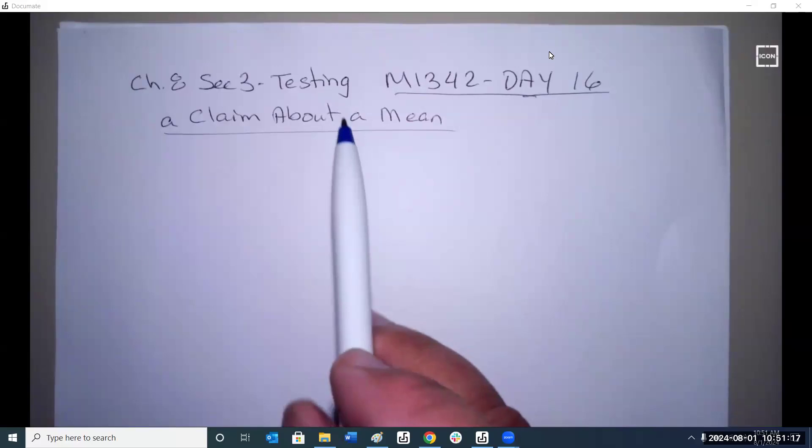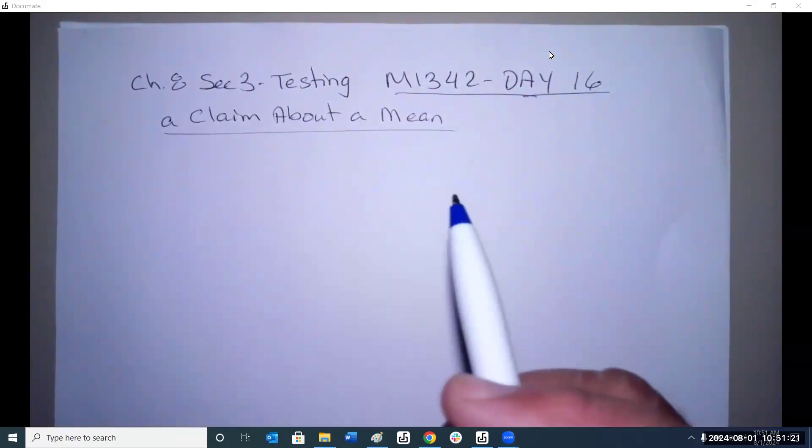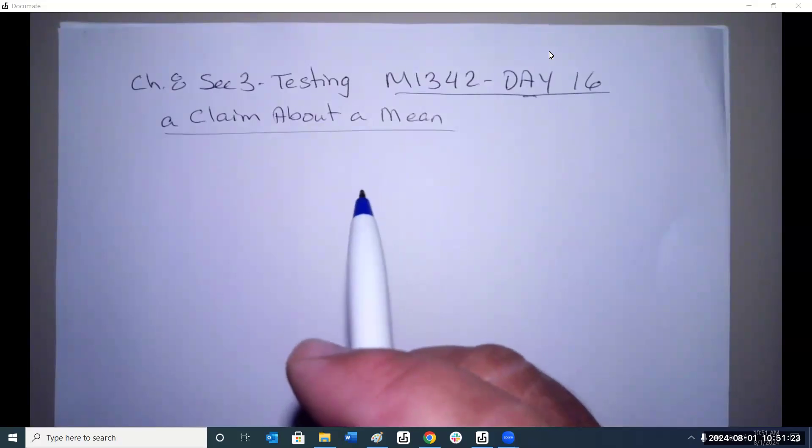What this section does is tests a claim about a mean, a population mean usually. So this one's used a lot more than what we just did earlier. Why is this method important? It tells us, on average, how does the sample work with respect to the population.